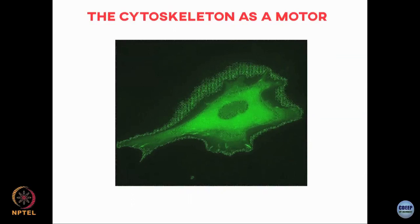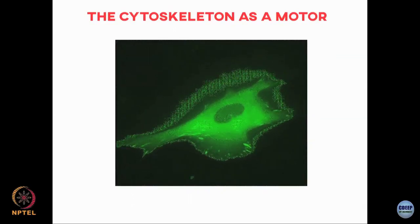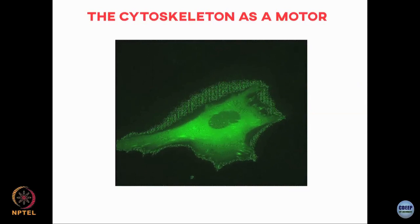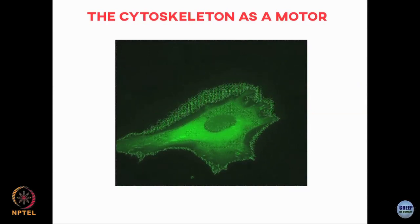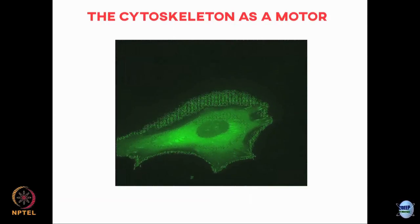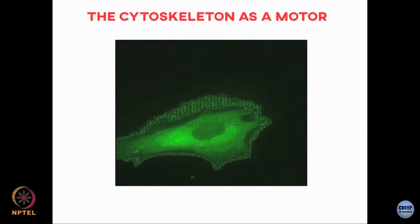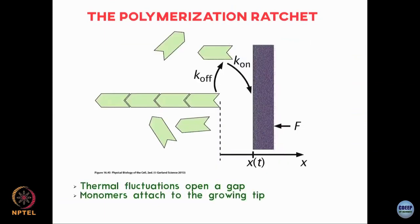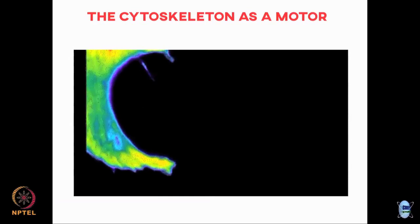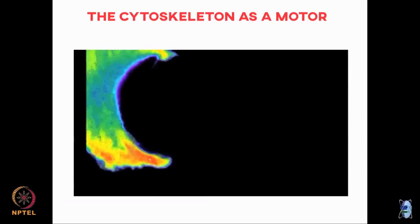For example, in a cell, the cell membrane experiences forces being exerted by the polymerization of cytoskeleton filaments. This becomes clearer if you see a movie showing how a fibroblast cell actually moves through the polymerization of actin. A fibroblast cell moves through the formation of structures called lamellipodia, which are filamentous structures that it randomly protrudes.